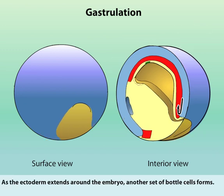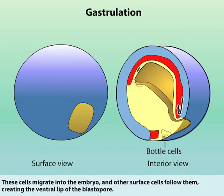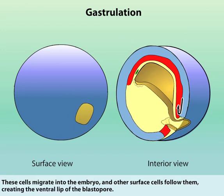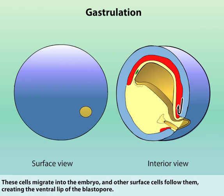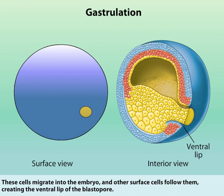As the ectoderm extends around the embryo, another set of bottle cells forms. These cells migrate into the embryo and other surface cells follow them, creating the ventral lip of the blastopore.